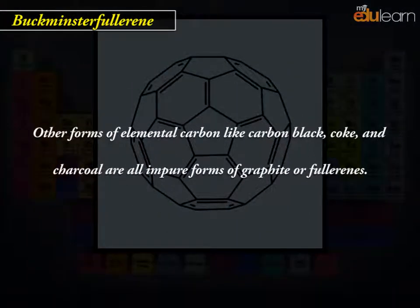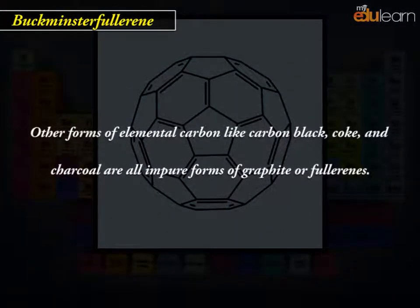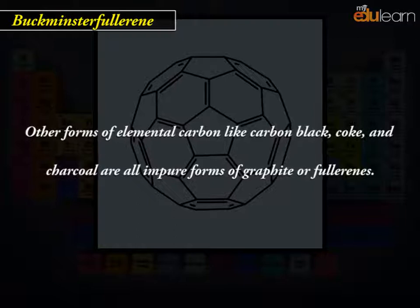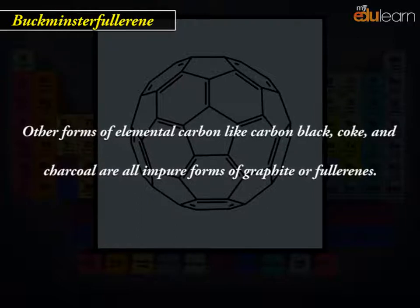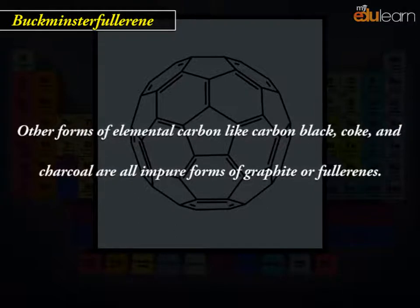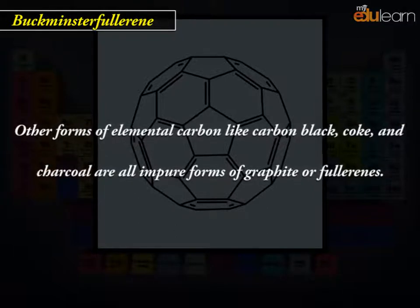Other forms of elemental carbon like carbon black, coke and charcoal are all impure forms of graphite or fullerenes.